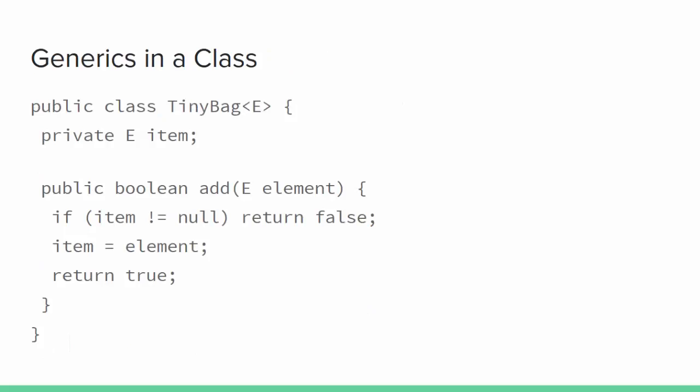In the actual collection class, we specify the generic type with some placeholder value. E and T are the most commonly used placeholders because E is the first letter of element and T is the first letter of type. The placeholder can be anything, but sticking to conventions will cause you and other readers less confusion.